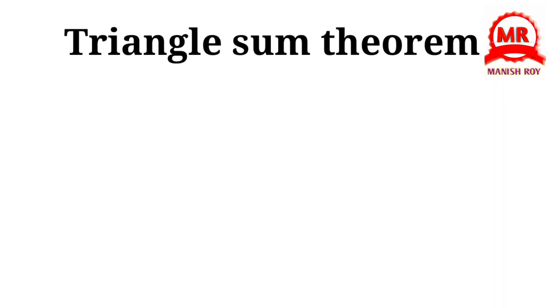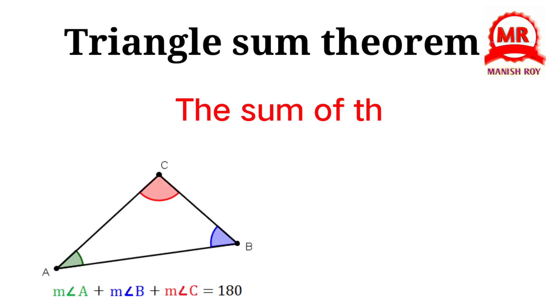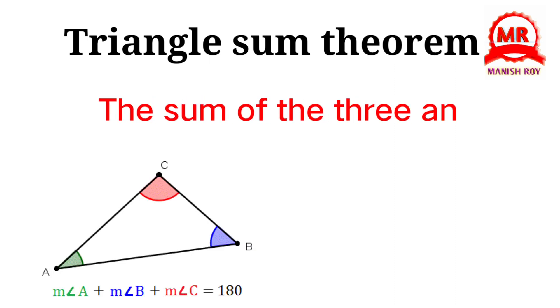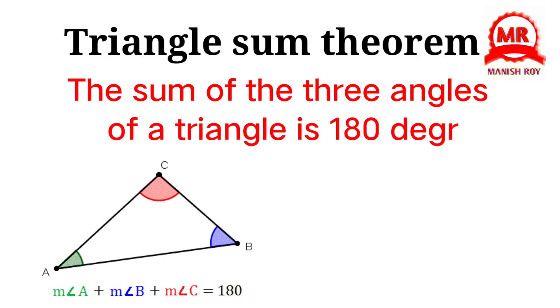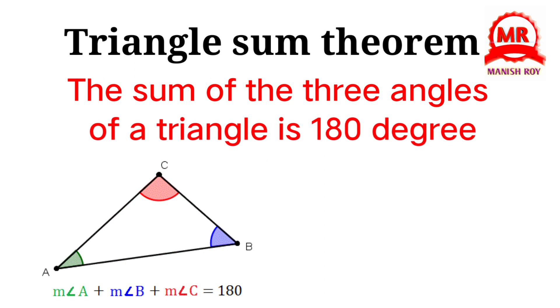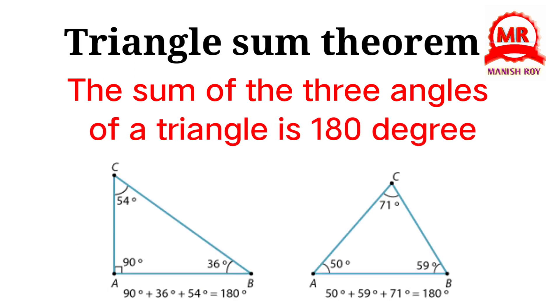Triangle sum theorem. The sum of the three angles of a triangle is 180 degrees. Let's see some examples.